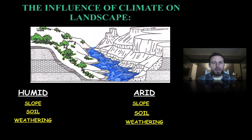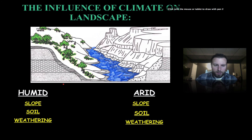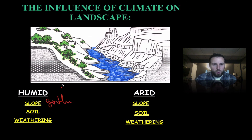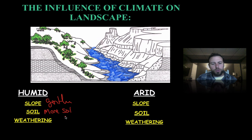Climate can have several different effects on our landscapes. In a humid climate, we'll see gentle slopes. The soil layer will be the result of more chemical weathering and will be built up — more soil with a higher nutrient or organic matter content. Weathering will be mostly chemical.